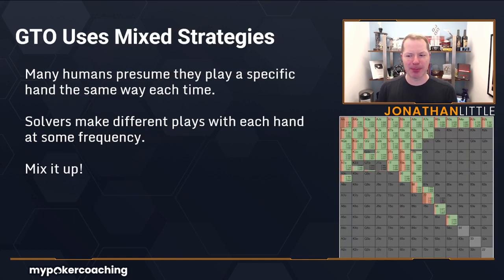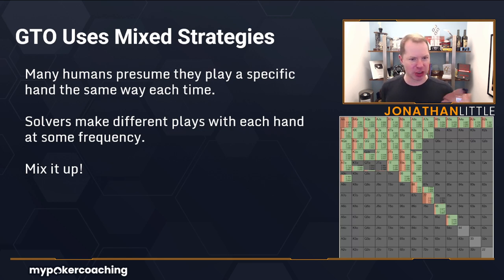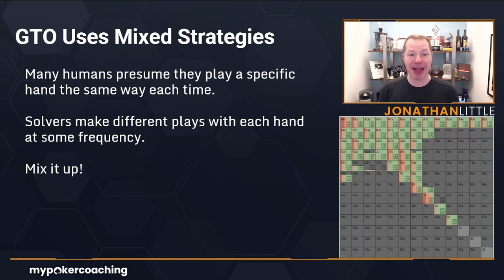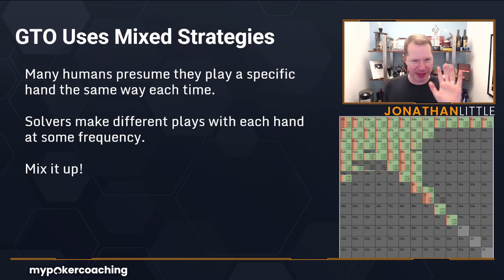You're going to find that GTO uses mixed strategies, meaning with each particular hand, the GTO output will be to do a different thing with the same type of hand a large amount of the time. Most of us humans presume they play a specific hand the same way each time. For example, say you raise before the flop with pocket aces, your opponent calls, the flop comes — most people think, I bet aces every time, it's always good, right? You just want to get money in the pot. But you'll find the GTO strategy is probably going to check aces some portion of the time unless your range is so strong that you bet with everything.